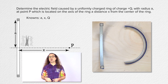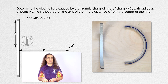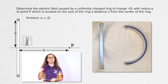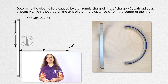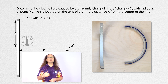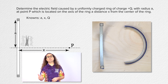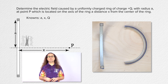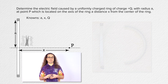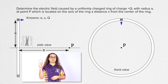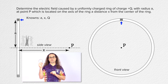Our known values are a, the radius of the ring; x, the distance from the center of the ring to point P, which for symmetry purposes is along the axis of the ring; and capital Q, the total positive charge on the ring. We are going to break our ring into infinitesimally small charges dq, which are illustrated in the front view of our uniformly charged thin ring.